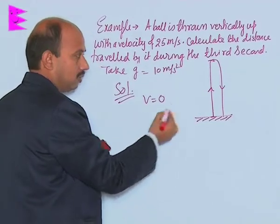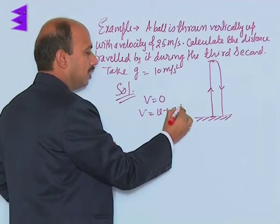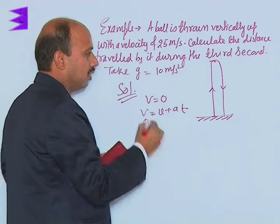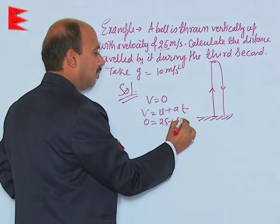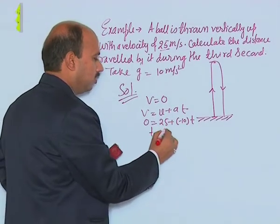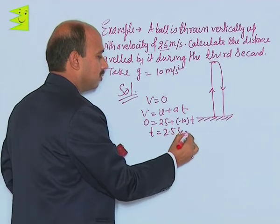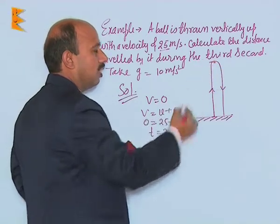We can write V equals u plus at. So 0 equals 25 plus minus 10 times t, and you will get t equals 2.5 seconds. It means the body takes 2.5 seconds to reach this height.